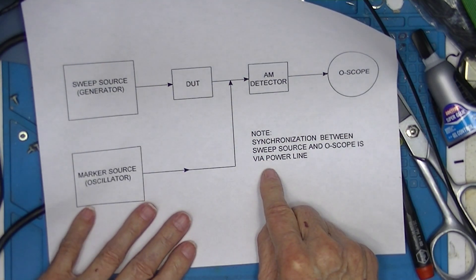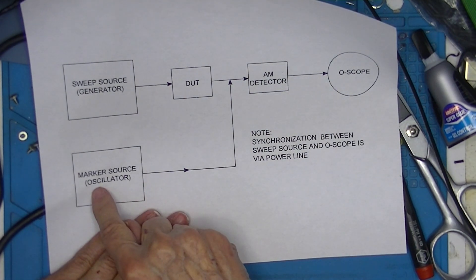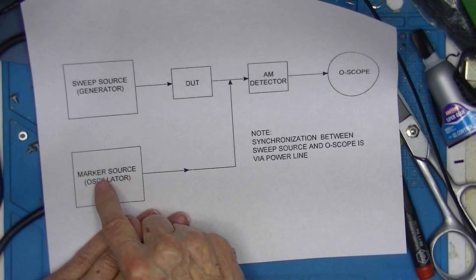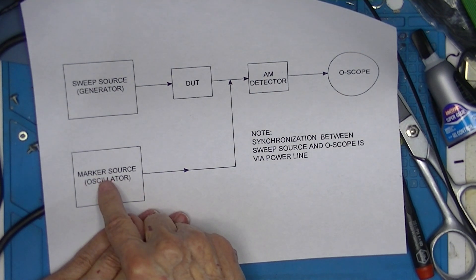In order to make this whole system work we need a second oscillator. A marker oscillator or a marker source. This could be a crystal oscillator or it could be a manually varied oscillator.